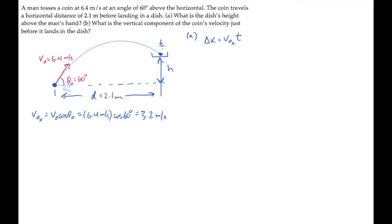We'll call the time that it reaches the dish t sub d. So in this equation, when time equals t sub d, the horizontal displacement equals d, the horizontal distance between the hand and the dish. Solve this for the time it takes the coin to reach the dish, and substitute the values to see that it takes 0.656 seconds.